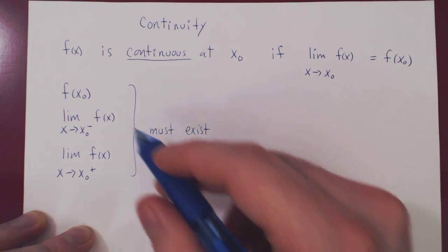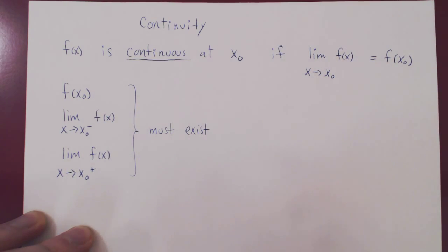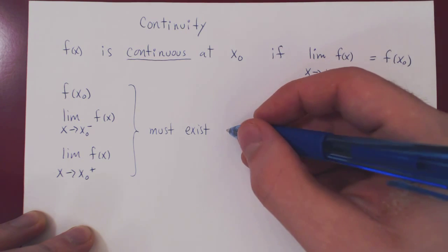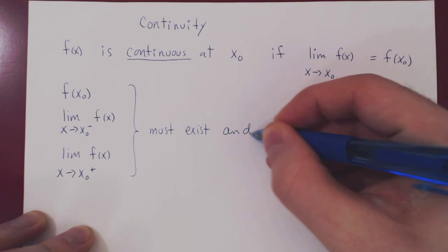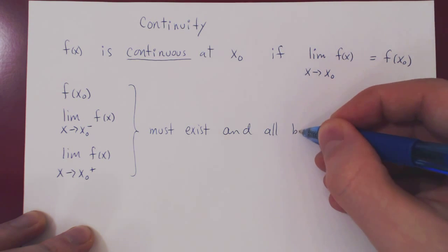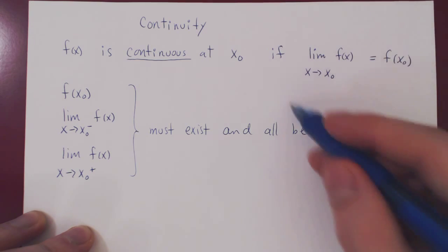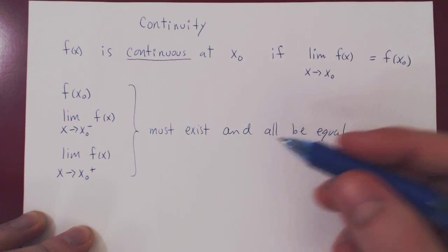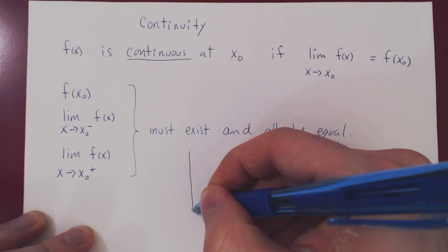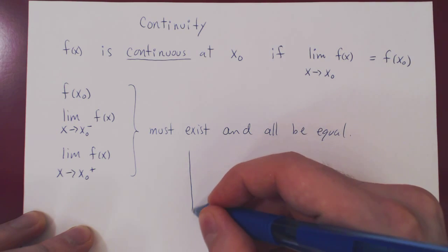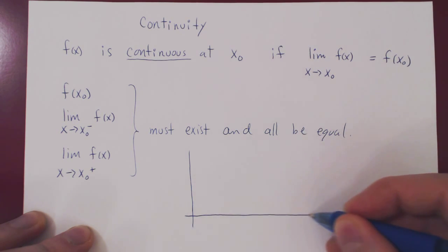And by saying exist, I mean they have to actually be equal to a real number. We reject here positive and negative infinity. So let's look at this graphically. Assume, just for argument's sake, that x0 is a positive value of x.